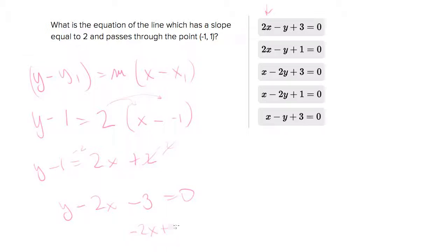Negative 2x plus y minus 3, that's the right order but notice that the signs are all flipped, they have positive values for x.